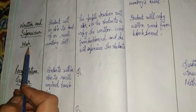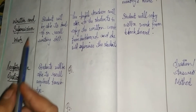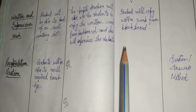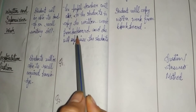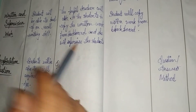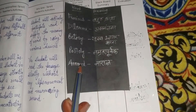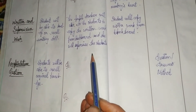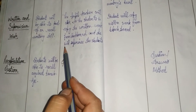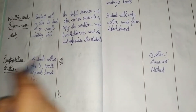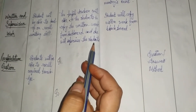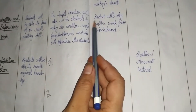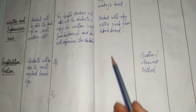Next comes written and supervision work. The purpose is to develop and recall the students' writing skills. The teacher will ask the students to copy the written work from the blackboard. You have seen the blackboard — many words have been written there as blackboard entries. The teacher will instruct the students to write all the written work from the blackboard in their notebooks. The teacher must supervise the students because some students do not write in their notebooks, so the teacher moves around the class to supervise all students.